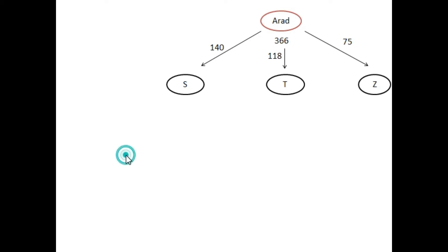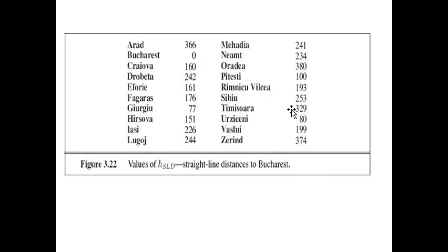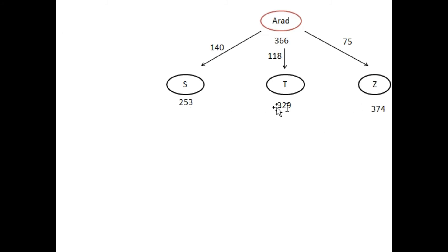We will calculate f(x) to determine which node to visit next. Looking at this slide, the heuristic value for S is 253, the heuristic value for T is 329, and the heuristic value for Z is 374. I write the heuristic values for all three nodes here. We will traverse node S next, because the heuristic value for this node is less than the heuristic values of T and Z.